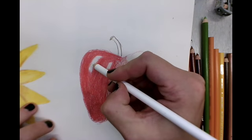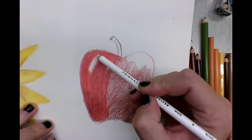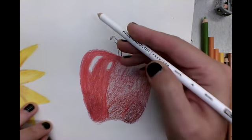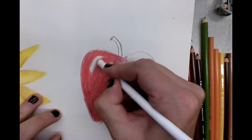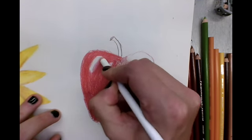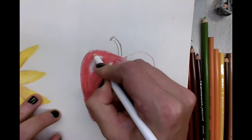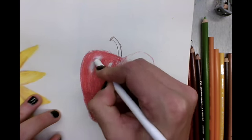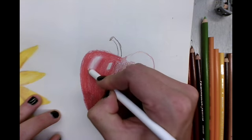So one way to add your highlight especially if you've already left yourself a nice negative space is to grab your white colored pencil and fill it in and then kind of blend it out a little bit. So the white colored pencil actually can blend a little if you need it to.